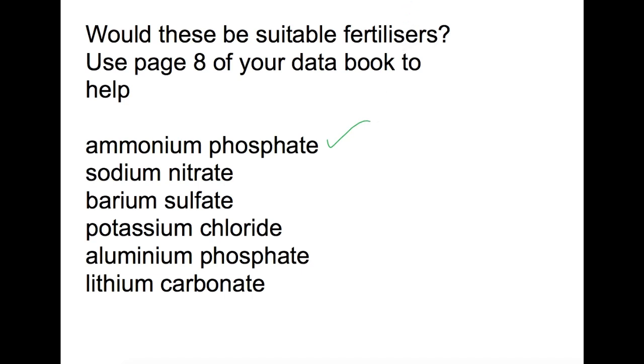We then have sodium nitrate. This contains nitrogen and is also soluble, so would be a fertilizer. We then have barium sulfate. This doesn't contain any of the required elements and it is also not soluble, so it would not be useful as a fertilizer. Potassium chloride contains potassium, which is one of the elements, and is also soluble, so could be a fertilizer.